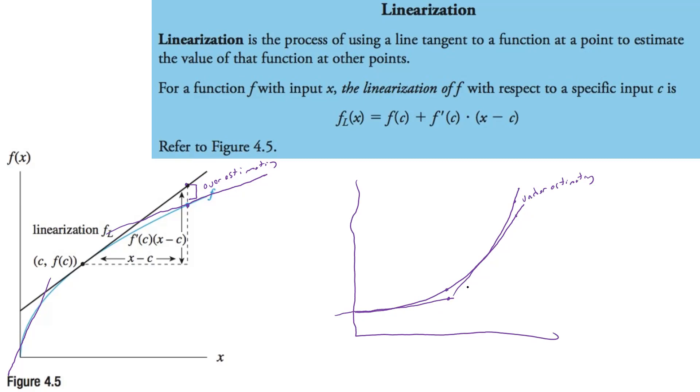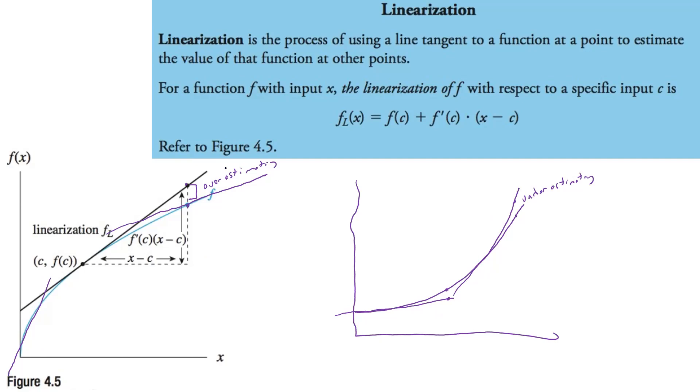So concave up, tangent lines are always going to be under our curve. So we're going to always underestimate. Concave down, we're always going to have a tangent line above the curve. And so we're going to overestimate. So that comes into play on the next couple kind of questions.